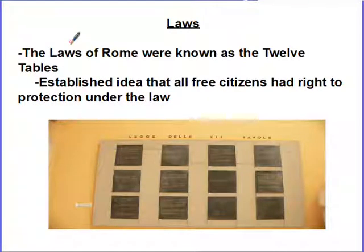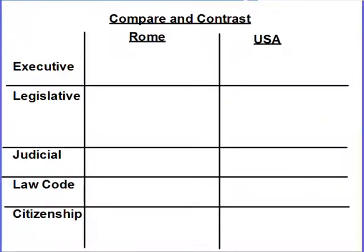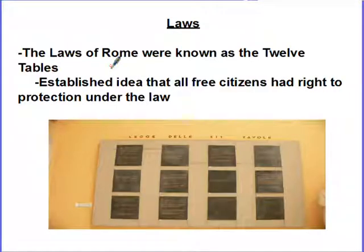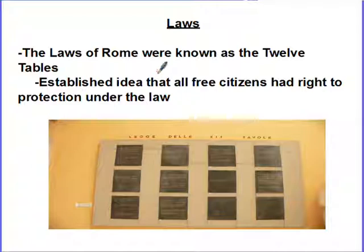The laws of Rome are known as the Twelve Tables, and these establish the idea that all citizens have the right to protection under the law. The laws of Rome were codified and put on stone or paper, put out for all to see so that everyone knew the laws. This is something we've seen with Hammurabi, with Persia, and with the Edicts of Ashoka — it seems like good and powerful civilizations have in common that they have laws everyone knows.